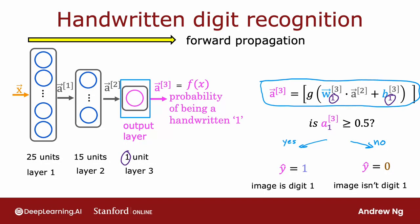And by the way, this type of neural network architecture, where you have more hidden units initially, and then the number of hidden units decreases as you get closer to the output layer, that's also a pretty typical choice when choosing neural network architectures. And you see more examples of this in the practice lab as well.